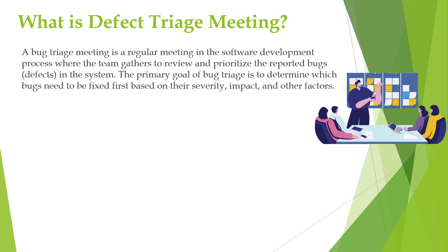In this meeting, discussion is done on each and every defect or bug. The teams gather to review and prioritize the reported bugs or defects in the system. The primary goal of the bug triage is to determine which bugs need to be fixed first, based on their severity, impact, and other factors.